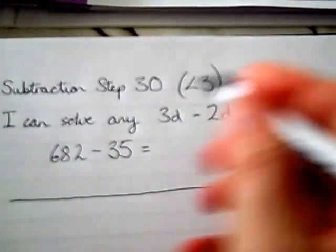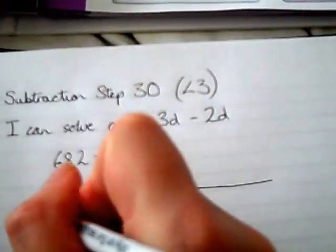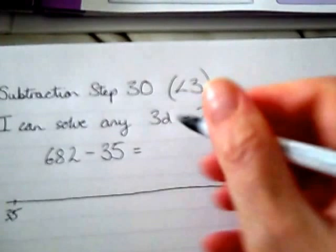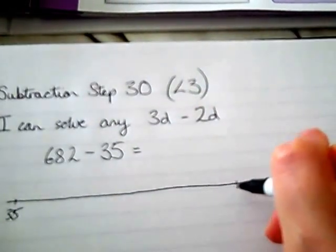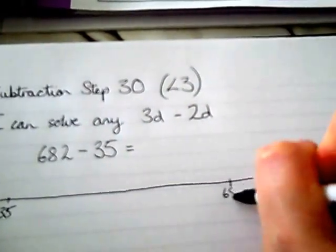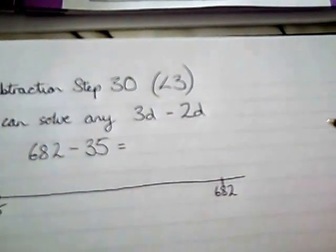Remember we're finding the difference between the two numbers. So the smaller number goes down there, 35, and we want to find out the difference between 35 and 682.